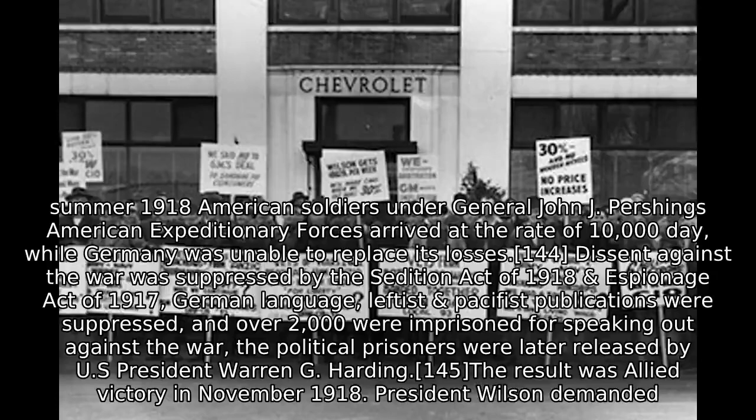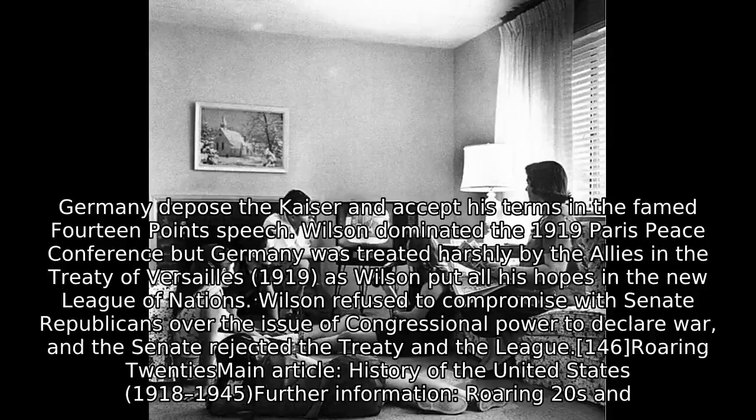The result was Allied victory in November 1918. President Wilson demanded Germany depose the Kaiser and accept his terms in the famed 14-point speech. Wilson dominated the 1919 Paris Peace Conference, but Germany was treated harshly by the Allies in the Treaty of Versailles, 1919, as Wilson put all his hopes in the new League of Nations. Wilson refused to compromise with Senate Republicans over congressional power to declare war, and the Senate rejected the treaty and the League.